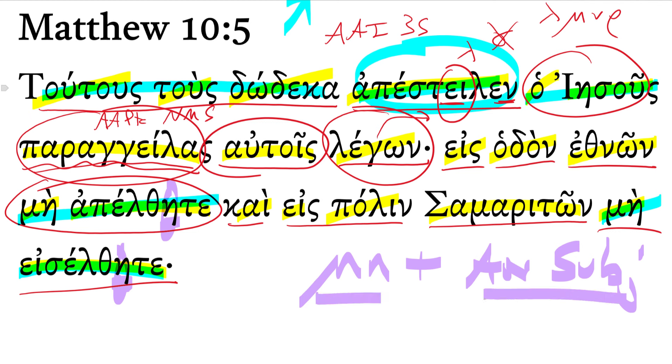So that's what we have in both of these cases, and they're both second aorist subjunctives. You'll just note that the lexical form of ἀπέλθητε is ἀπέρχομαι, to go away or to go, and εἰσέλθητε, the lexical form is εἰσέρχομαι, to enter or to go in.